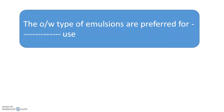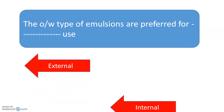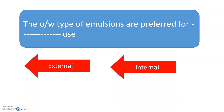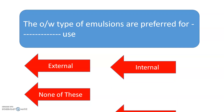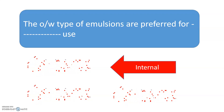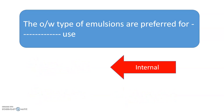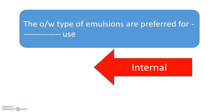The O/W type of emulsions are preferred for which use? The options are: external use, internal use, none of these, or topical use. The correct answer is internal use. The O/W type of emulsions are preferred for internal use — remember that.